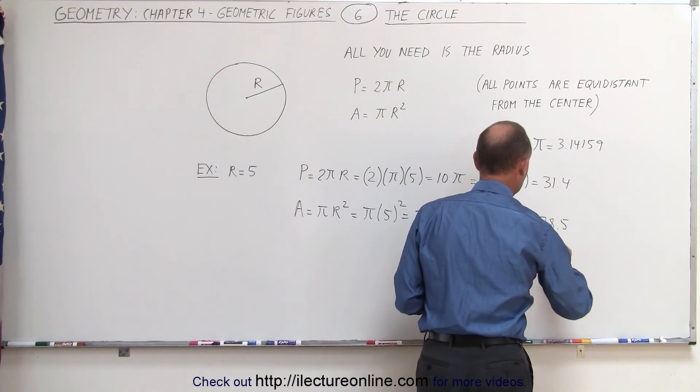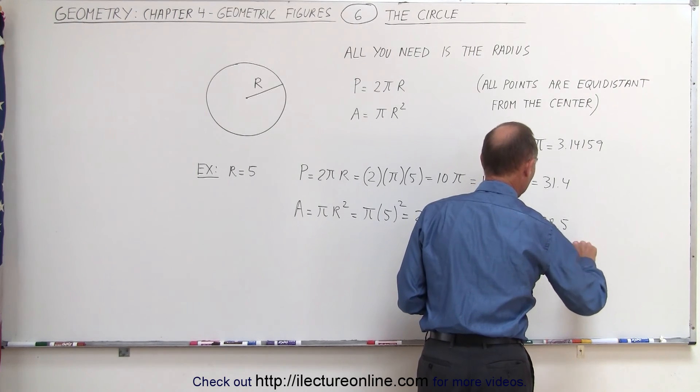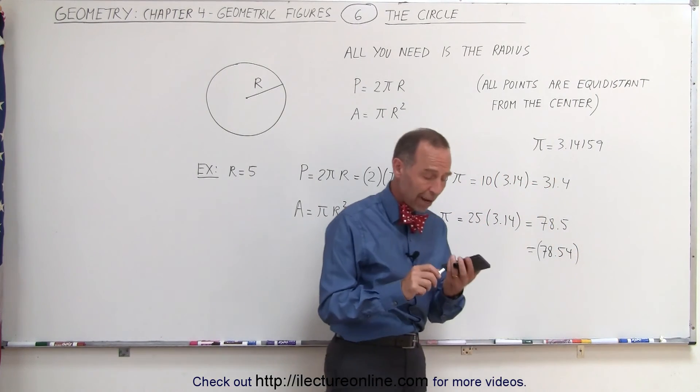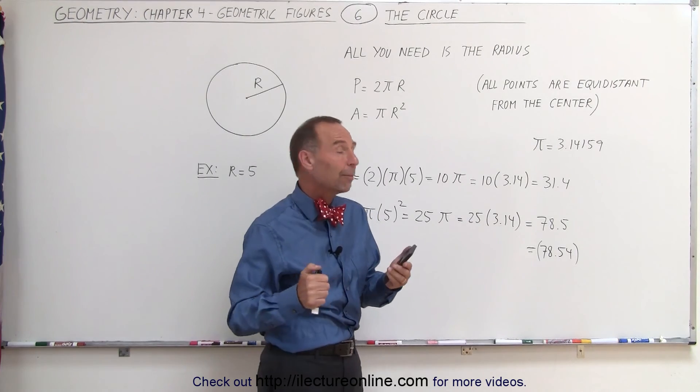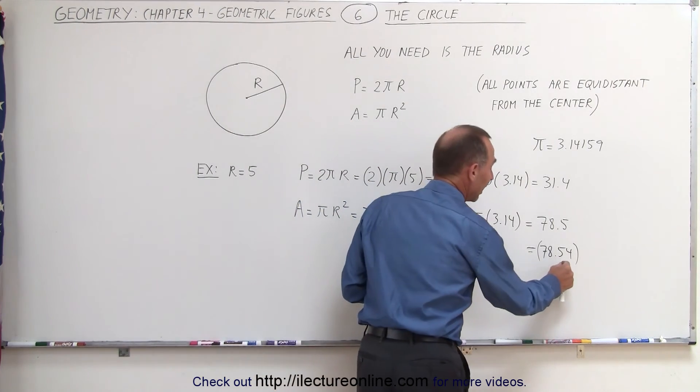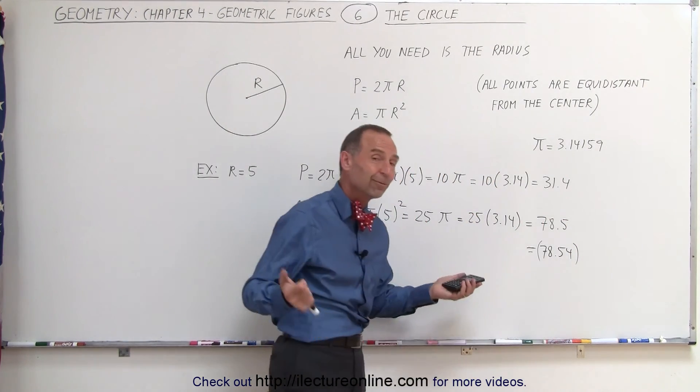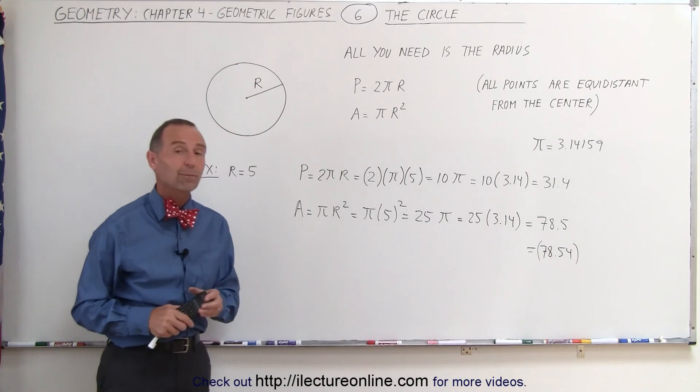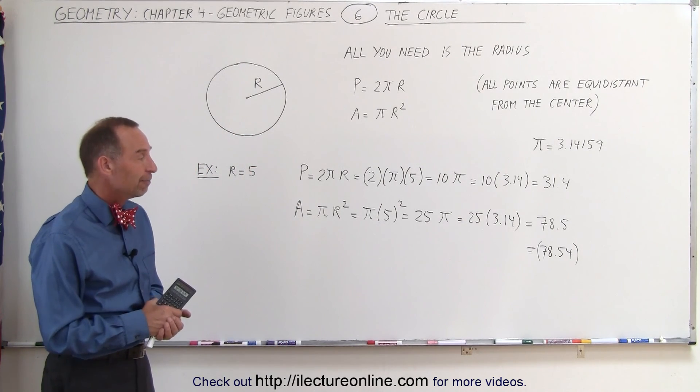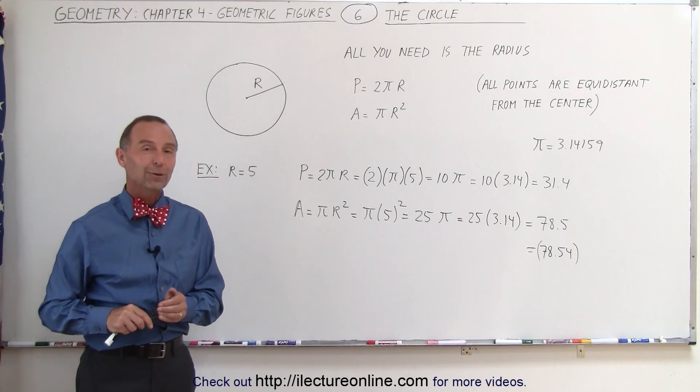So that's equal to 78.54 if I use the exact value for π. But again, if I don't care that much about the exact accuracy and I think that one decimal place is sufficient, approximating π as 3.14 would be good enough. And that's how we do that.